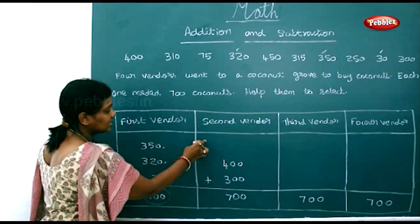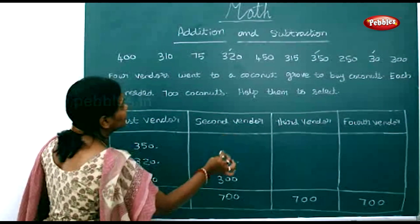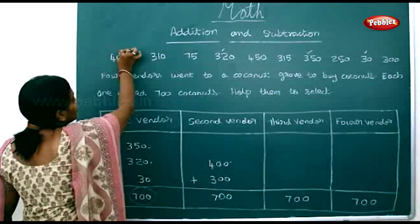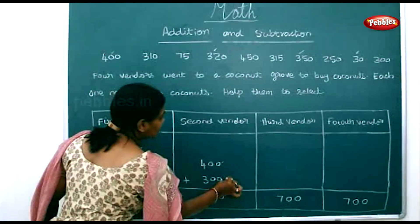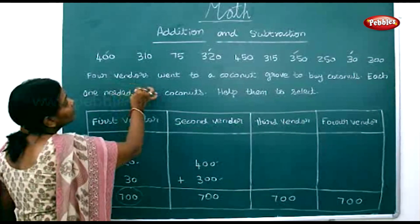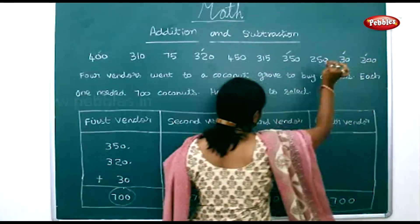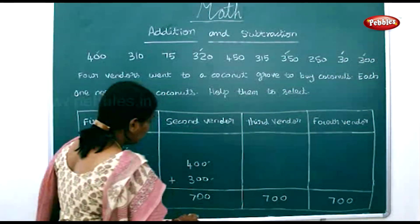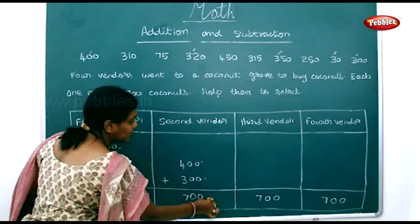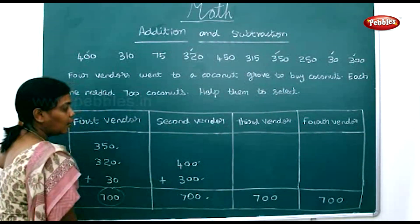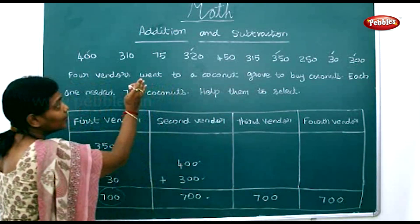The second vendor went and took 400 coconuts first, then he took 300 coconuts. With this 400 and 300, he formed 700 coconuts together.